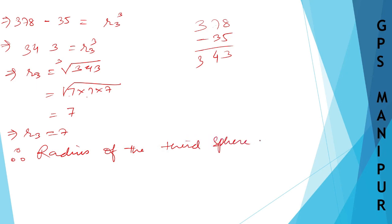Therefore, the radius of the third sphere is equal to 7 centimeters. I hope this is the correct answer. Thank you so much. If you have any doubts, please write in the comments below. We will meet in the next video.